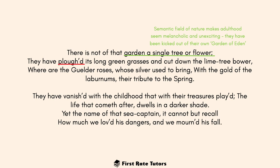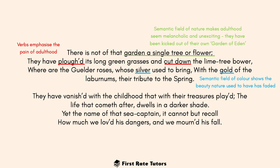The verbs 'plowed' and 'cut down' are slightly violent and emphasize the pain of adulthood. The semantic field of colors — 'silver' and 'gold' — describes the different plants and flowers like roses and laburnums, showing the beauty of nature they used to see as children, which has now faded. The alliteration of 't' in 'they have vanished... the childhood that their treasures' emphasizes the speaker's mourning at the end of their childhood — they've lost so much and the speaker is so sad reflecting on the fun she used to have with her brother.